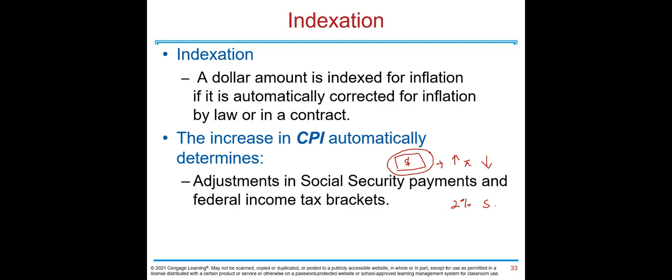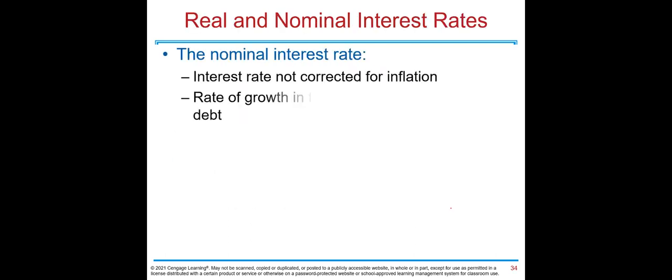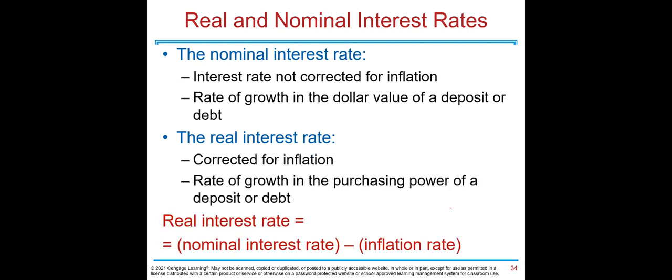Next: real and nominal interest rates. The nominal interest rate is the money interest rate — the rate when you deposit money in a bank. It does not correct for inflation and shows the rate of growth in the dollar value of a deposit or debt. If you put $1,000 in a bank at five percent, you earn $50 in dollars after one year. The real interest rate, on the other hand, is corrected for inflation and shows the rate of growth in the purchasing power of a deposit or debt.